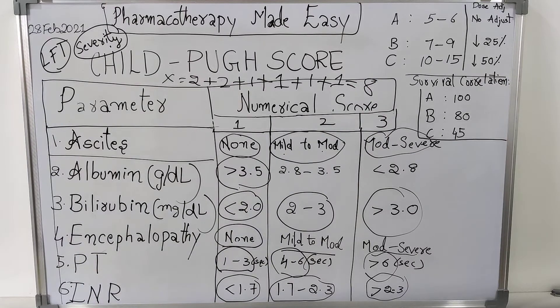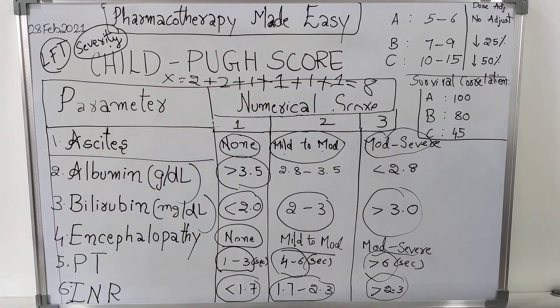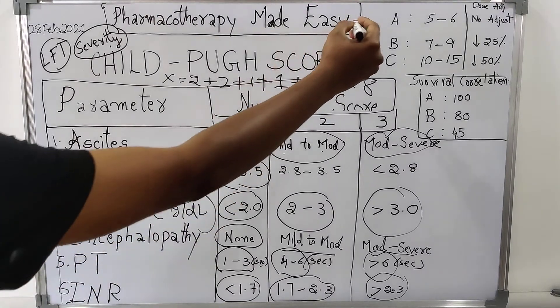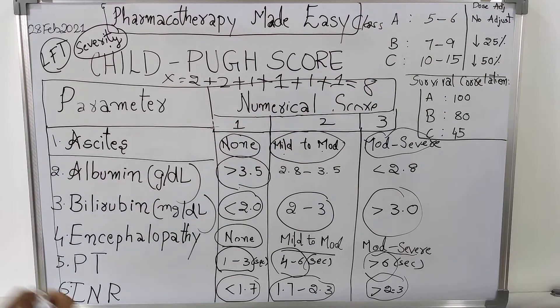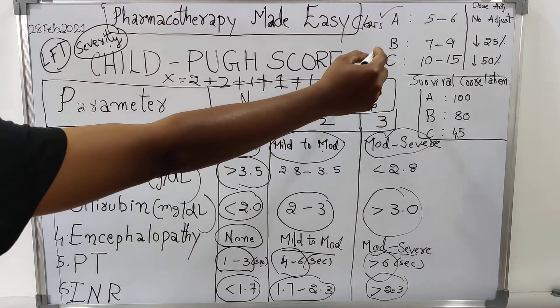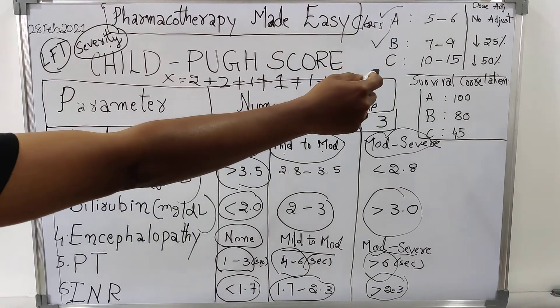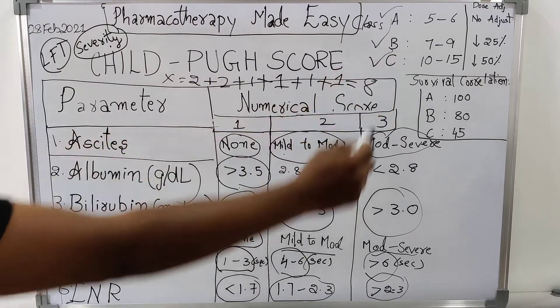And how to assess this score? Based on the score obtained, we should classify the patient into 3 classes: class A, class B, and class C. If the score is 5 to 6, patient comes under class A. If the score is in the range of 7 to 9, patient comes under class B. If the score is 10 to 15 range, patient comes under class C.